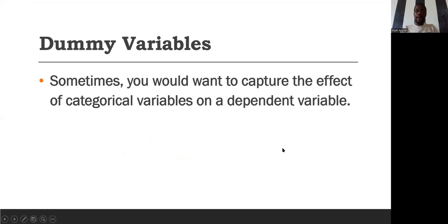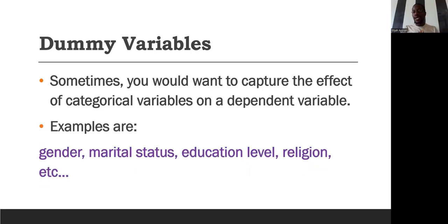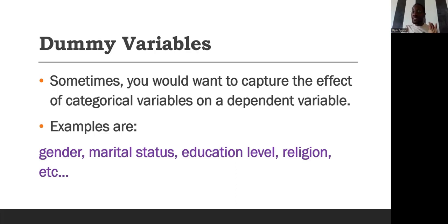Now let's discuss dummy variables, which we mentioned briefly earlier. Sometimes you want to capture the effect of categorical variables on a dependent variable. Examples include gender (how it affects wage), marital status (differences in wages between single, married, divorced, and separated individuals), education level (no education through tertiary qualification), and religion (Christian, Islamic, Hindu, Buddhist, etc.).